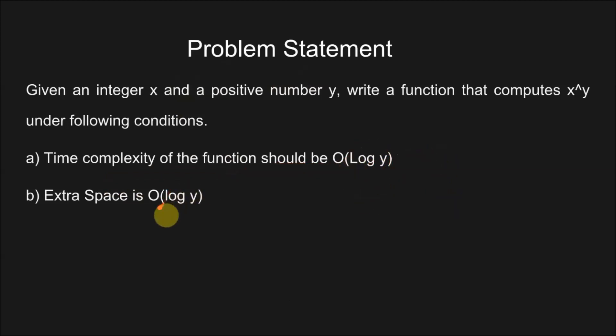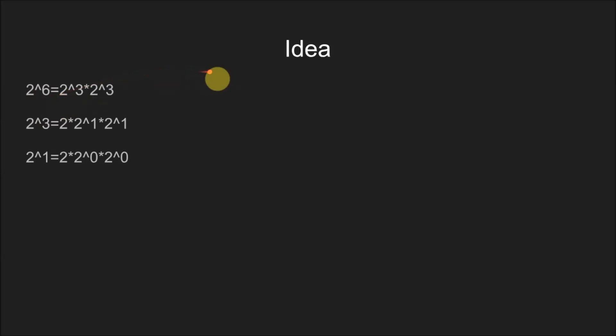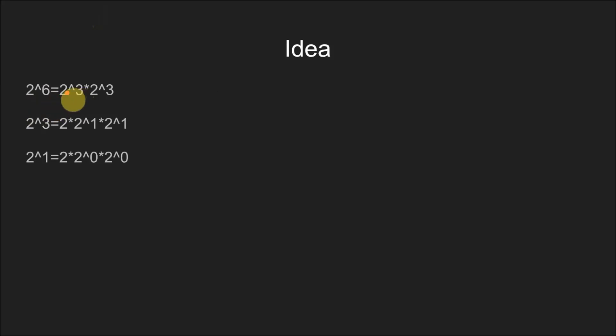Space complexity should also be O(log y). The main idea behind the algorithm is that if we want to calculate x to the power y, we need to break it into two parts: x to the power y/2 multiplied by x to the power y/2. For example, if we want to calculate 2 to the power 6, we can break it into two parts: 2 to the power 3 multiplied by 2 to the power 3.